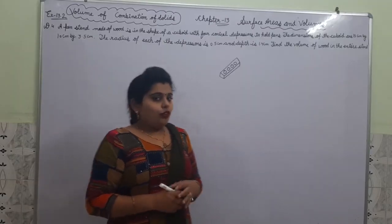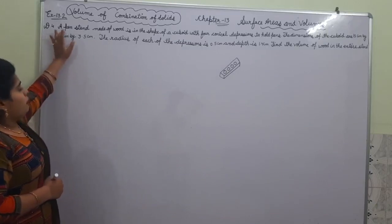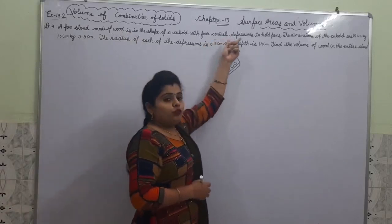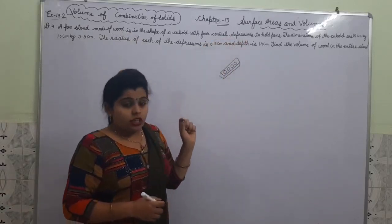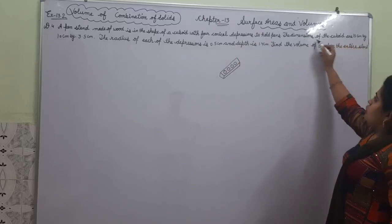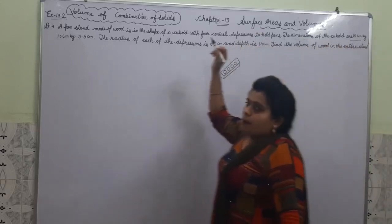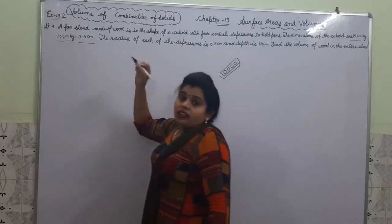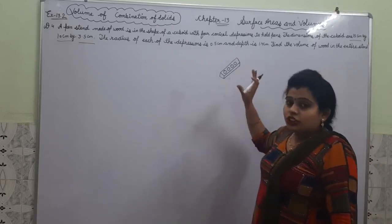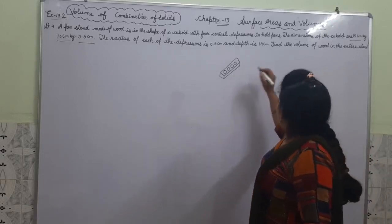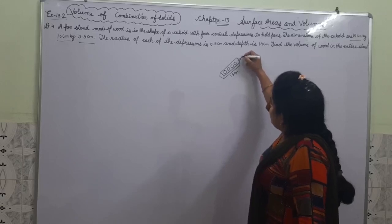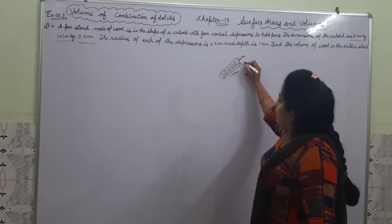Question number 4: a pen stand made of wood is in the shape of a cuboid with 4 conical depressions that can hold pens. The dimensions of the cuboid are 15 cm × 10 cm × 3.5 cm — that is, length = 15 cm, width = 10 cm, and height = 3.5 cm.